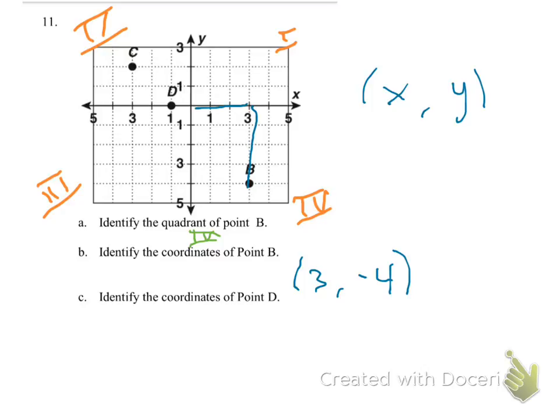Now, C, it says to identify the coordinates of point D. Well, we see that point D isn't even in a quadrant. It is on the X axis. Okay, so when we're looking at the point, we're going to go X in the X direction first. Okay, so I go over one.